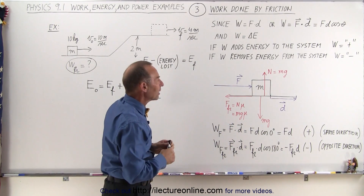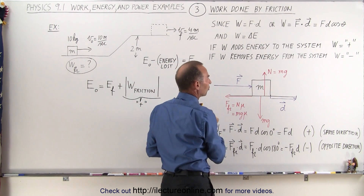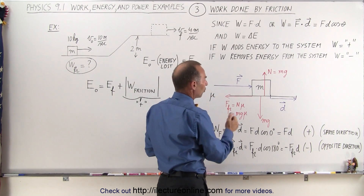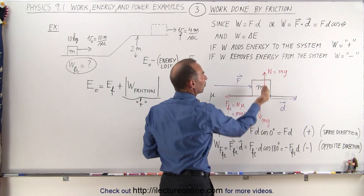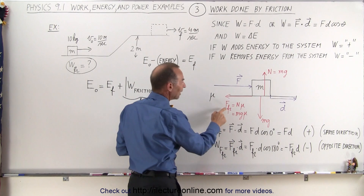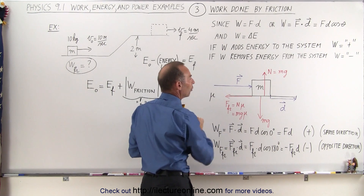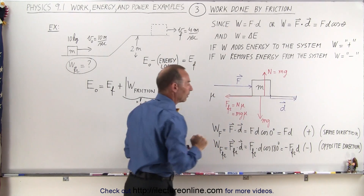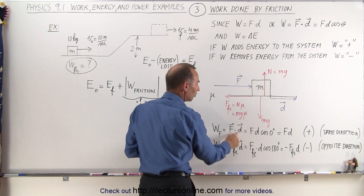Looking at this diagram, we have an object with mass m being pushed to the right by a force. We also have a coefficient of friction equal to mu, so there will be a friction force. We calculate the friction force by taking the weight of the object, from which we calculate the normal force — the surface pushing back — which is typically equal to the weight of the object. The friction force is then defined as the normal force times mu, so mg·mu is the friction force. The friction force is directed in the opposite direction of the motion of the block.